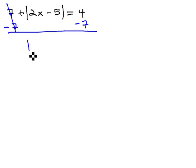As we do, we get the absolute value of 2x minus 5 equals negative 3.